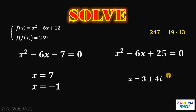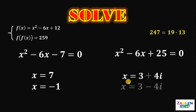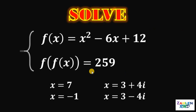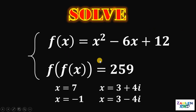Therefore, we also have two possible imaginary solutions: x equals 3 plus 4i and x equals 3 minus 4i. So the values of x for which this equation is satisfied are: x equals 7, x equals negative 1, x equals 3 plus 4i, and x equals 3 minus 4i. And as always, we are done.